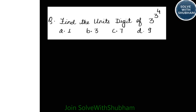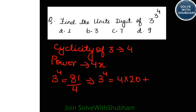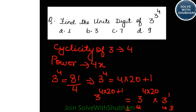Find the unit's digit of 3 to the power (3 to the power 4). Cyclicity of 3 is 4, so we represent the power in terms of 4. The power here is 3 to the power 4 which equals 81. Dividing 81 by 4 gives 20 remainder 1, so we write 3 to the power (4×20 + 1), which is 3 to the power (4×20) into 3 to the power 1. The first part ends with 1 and the second ends with 3, so our answer is 3. Option B.